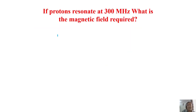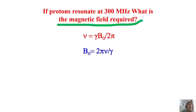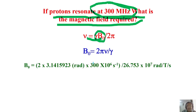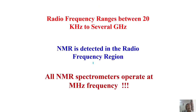No nucleus in the periodic table can have a resonating frequency higher than the proton, since it has the highest gamma among stable isotopes. As a further example: if a proton spectrum is acquired at 300 MHz, you can back-calculate B naught using the rearranged resonance equation B naught = 2π·ν / γ. Substituting the values, B naught turns out to be 7.04 tesla.